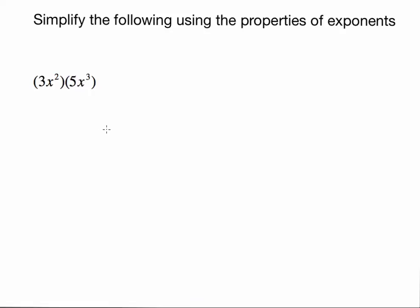The first expression: I want to multiply 3x squared times 5x to the third. Notice the only operation being indicated in this expression is multiplication — between the 3 and the x squared, between the 5 and the x to the third, and also between these two expressions. Using the commutative property of multiplication, I can move these pieces around so that I have 3 times 5 times x squared times x to the third.